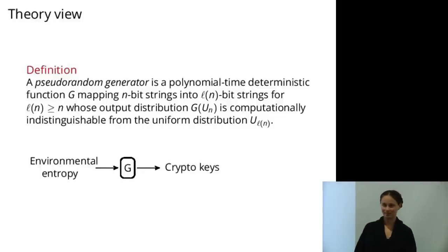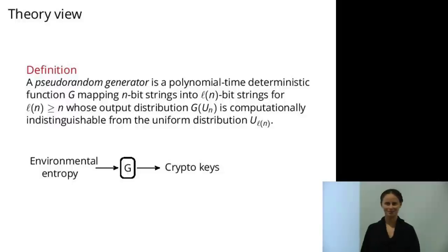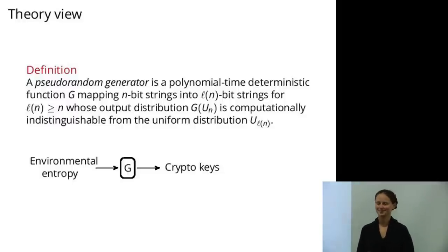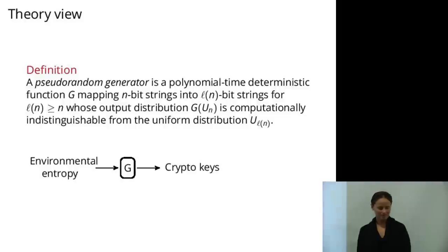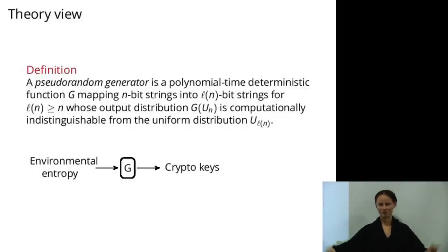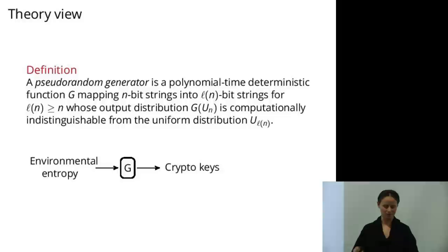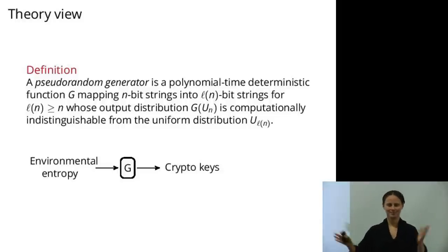I'll start with the theory view. Hopefully you've all seen some definition like this in your intro crypto class. In the theory view we have a pseudorandom generator: it's a polynomial-time deterministic function G mapping n-bit strings into L(n)-bit strings, for some L(n) ≥ n, whose output distribution is computationally indistinguishable from the uniform distribution on L(n)-bit strings.